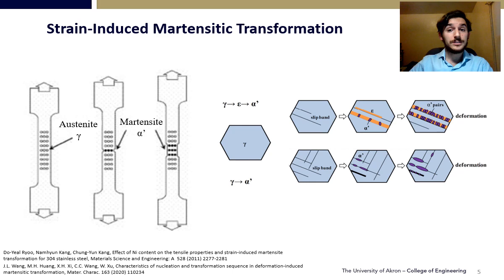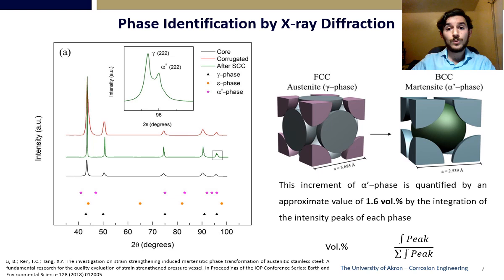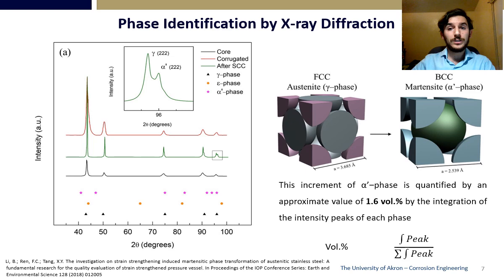For this test, austenitic 316LN rebar was selected. First, by XRD, the phase identification was done on the core and the corrugated section, as well as after the sample broke. All the peaks for the as-received sample were from the austenite; hence, no strain-induced martensite was seen from the manufacturing process by XRD. However, after SCC testing, a peak split is seen at 97 degrees, which meant an increase of 1.6% of the alpha-prime. This increase in martensite meant a higher corrosion susceptibility, as the chlorides would preferentially dissolve the martensite structure, allowing for premature pit nucleation where cracks could more easily be promoted.